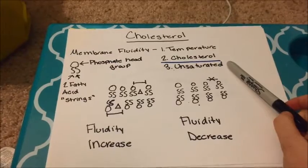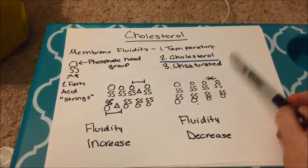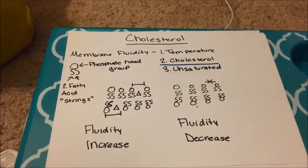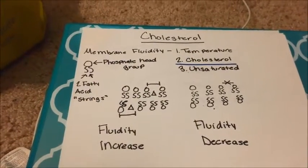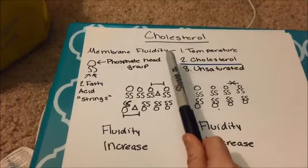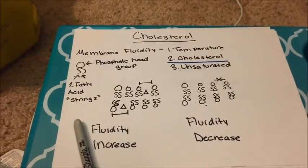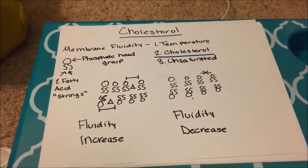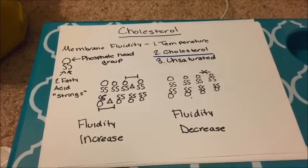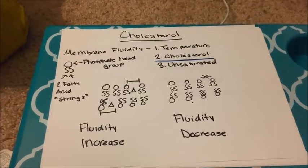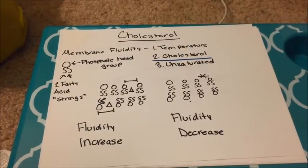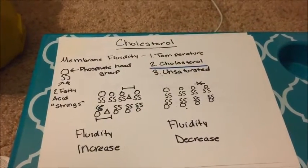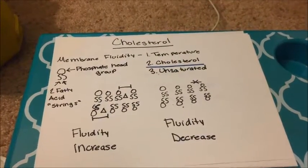Now as a little reminder, our membrane is made up of a phospholipid bilayer, which looks something like this. Our phospholipid bilayer is made up of phospholipids, and our phospholipids are composed of phosphate head groups and two fatty acid strings. When cholesterol is present in the phospholipid bilayer, it goes in between the phospholipids, which causes them to spread out, as they now can't come together.